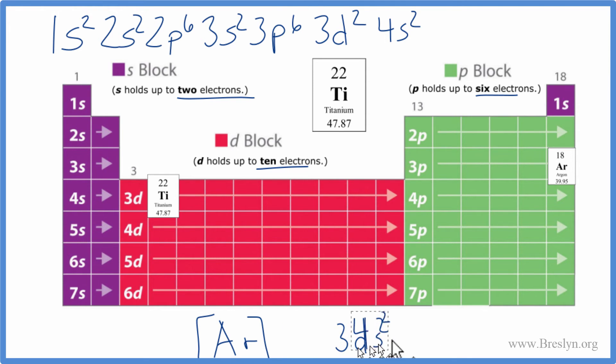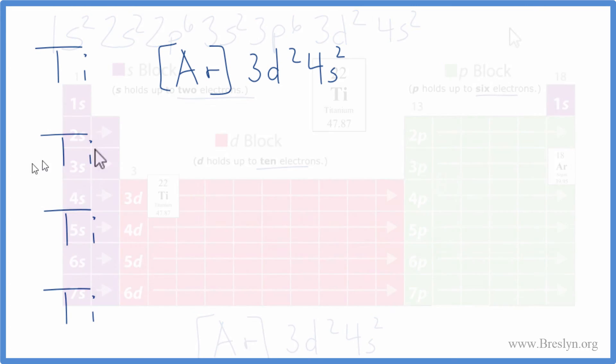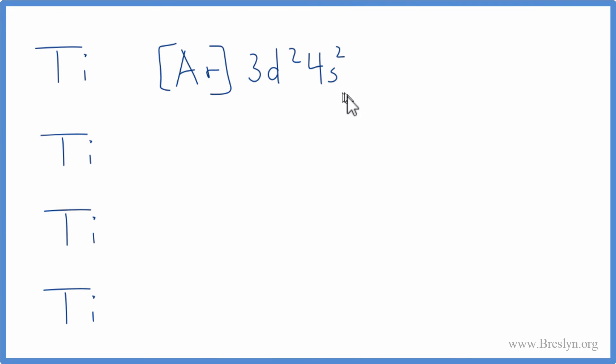We said we're going to put the 4s2 after the 3d, so let's do that. And then we'll use this notation here to write the electron configurations for the ions of titanium. So this is the neutral titanium. When we lose these two electrons, that gives us the positive charge. So we've lost two electrons. So we're just going to get rid of these two electrons here. And that gives us this electron configuration here for titanium 2+.